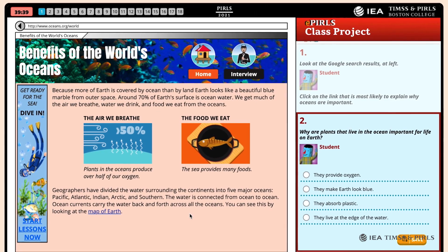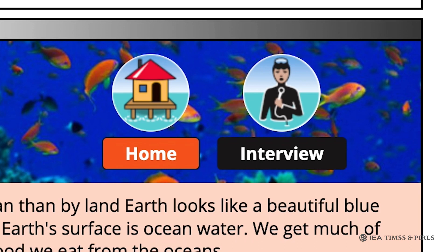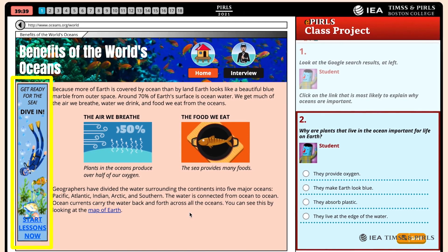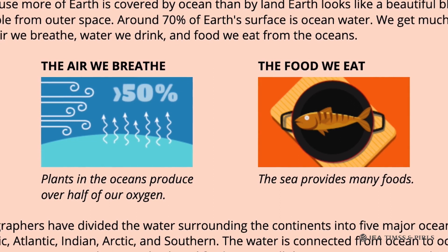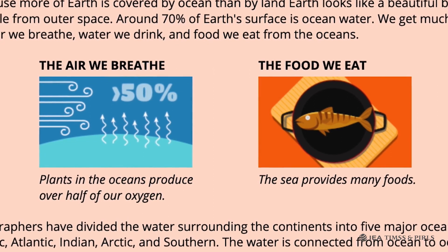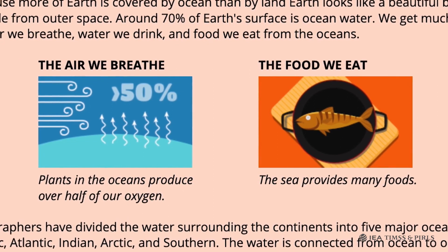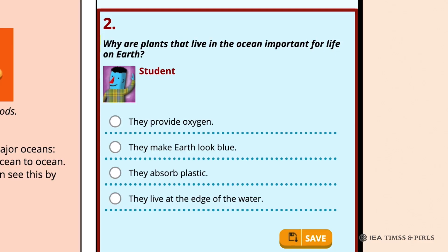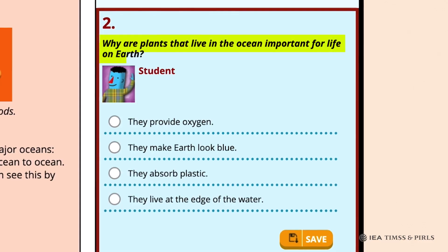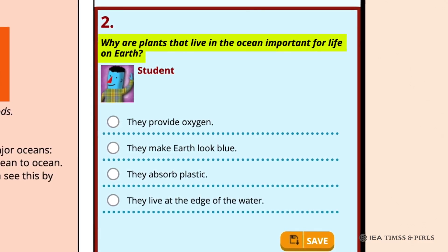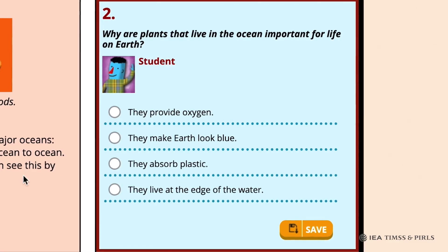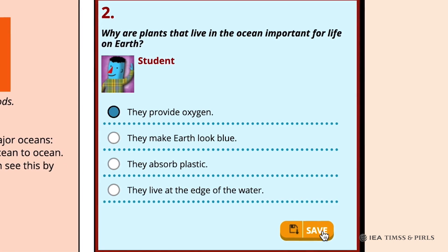The Benefits homepage has two icons for home and interview, an advertisement for diving lessons, as well as text and graphics about the major benefits of the oceans: air, water, and food. In Question 2, students are asked why the plants in the ocean are important for life on Earth. Based on the caption under 'The Air We Breathe,' students should choose the first option — that plants provide oxygen.